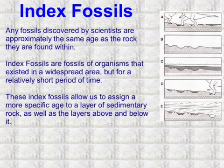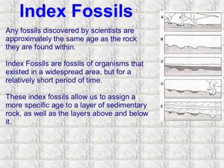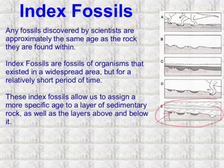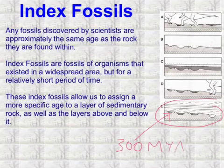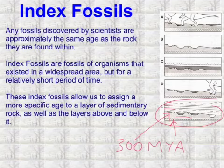Index fossils were discussed in the fossils lessons, but they can tell us a lot about sedimentary strata. If we have a bunch of rock layers and we find an index fossil we know is 300 million years old, that tells us the rock layer housing it is approximately 300 million years old. The layers above are automatically younger than 300 million years, and the layers below are older. It doesn't give us an exact absolute age, but it gives us more than just older versus younger.